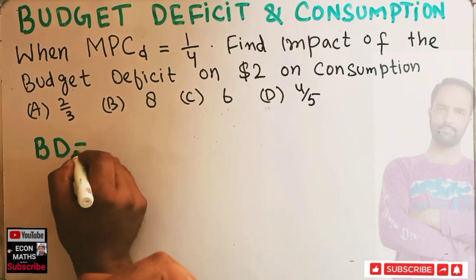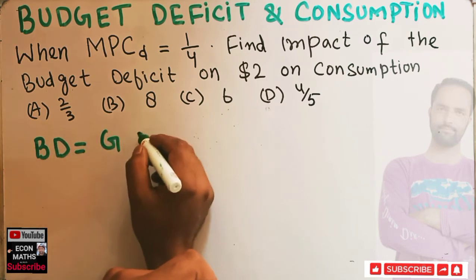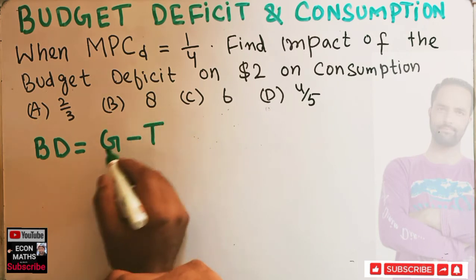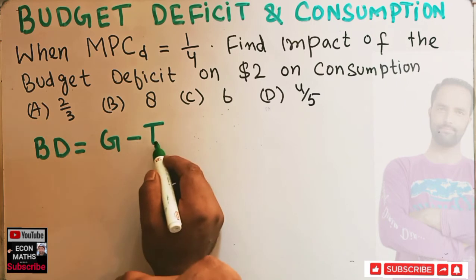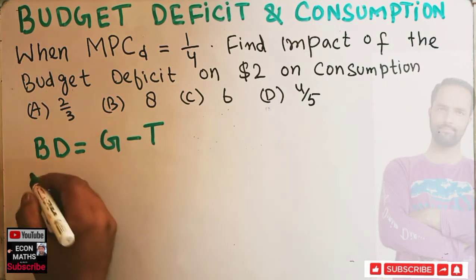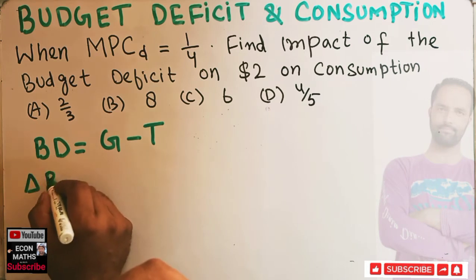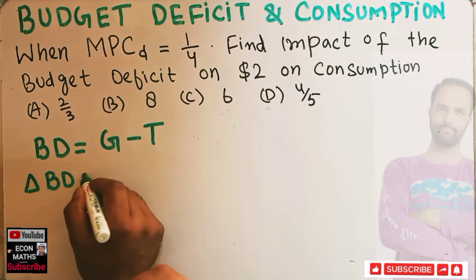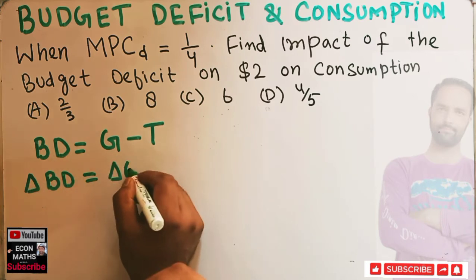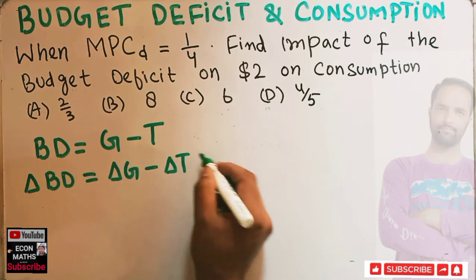Budget deficit is when government expenditure is greater than tax. So when we have expenditure greater than tax, we have the situation of budget deficit. Now, the change in budget deficit will be equal to the change in government expenditure minus the change in tax.